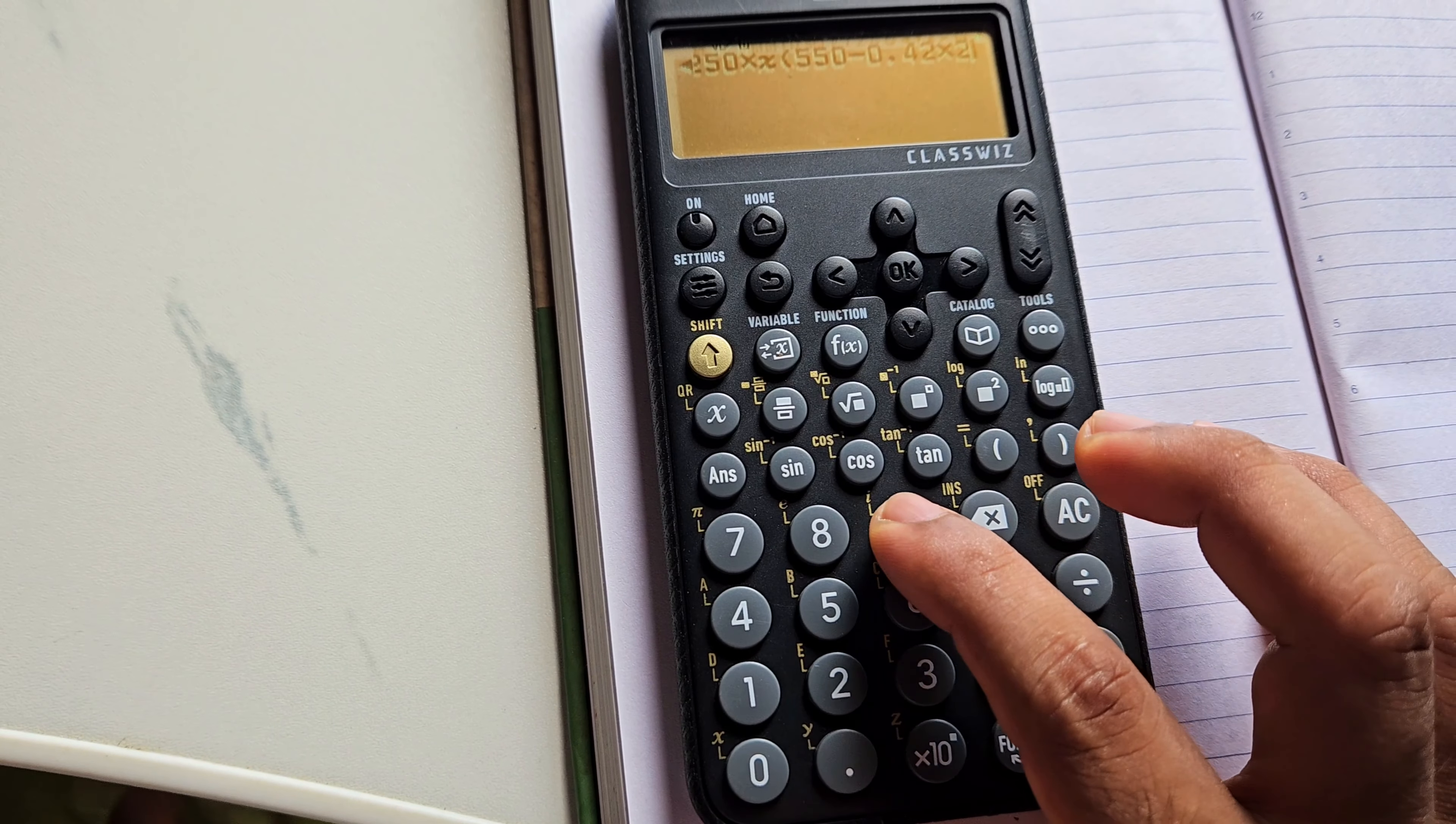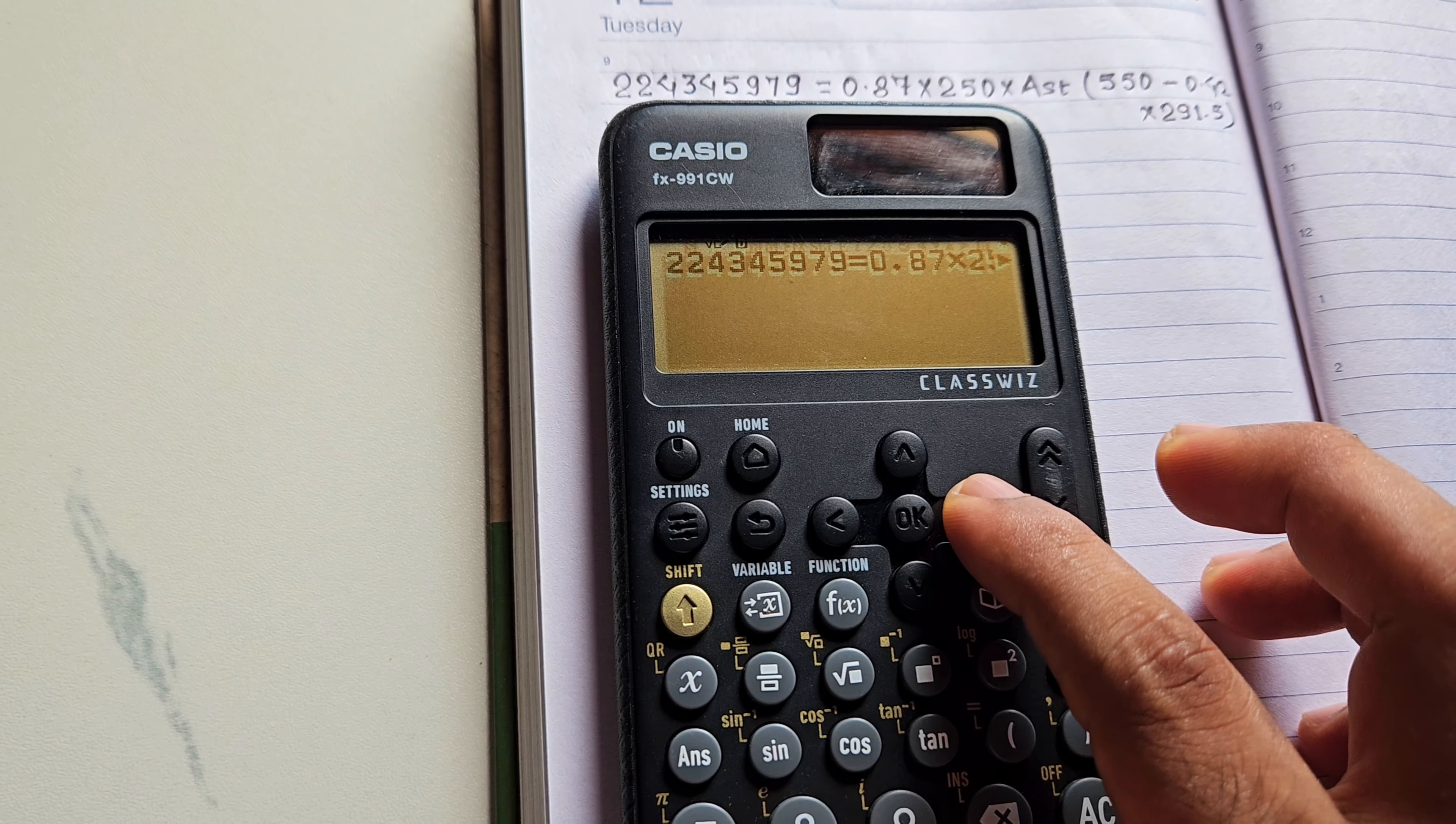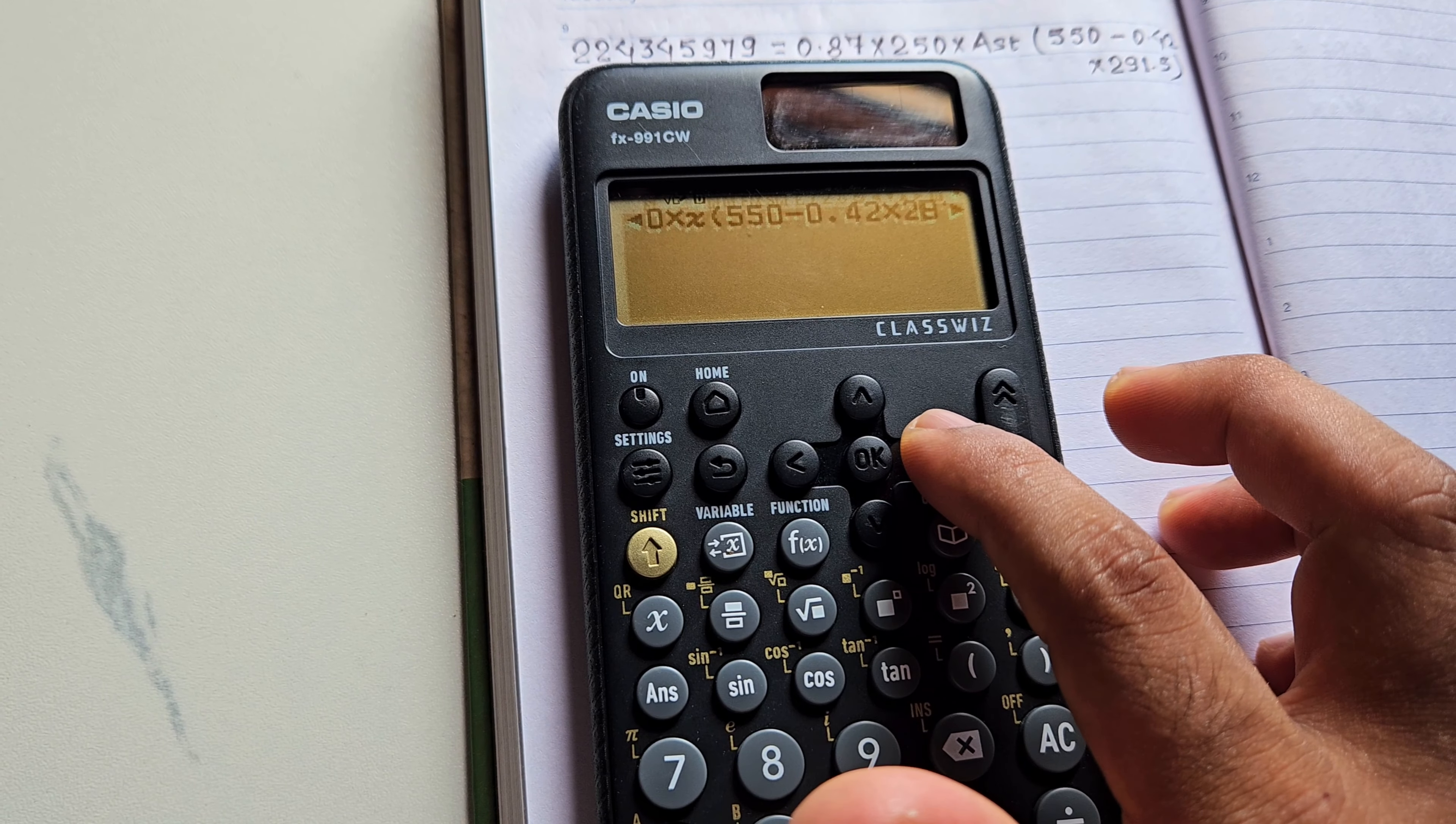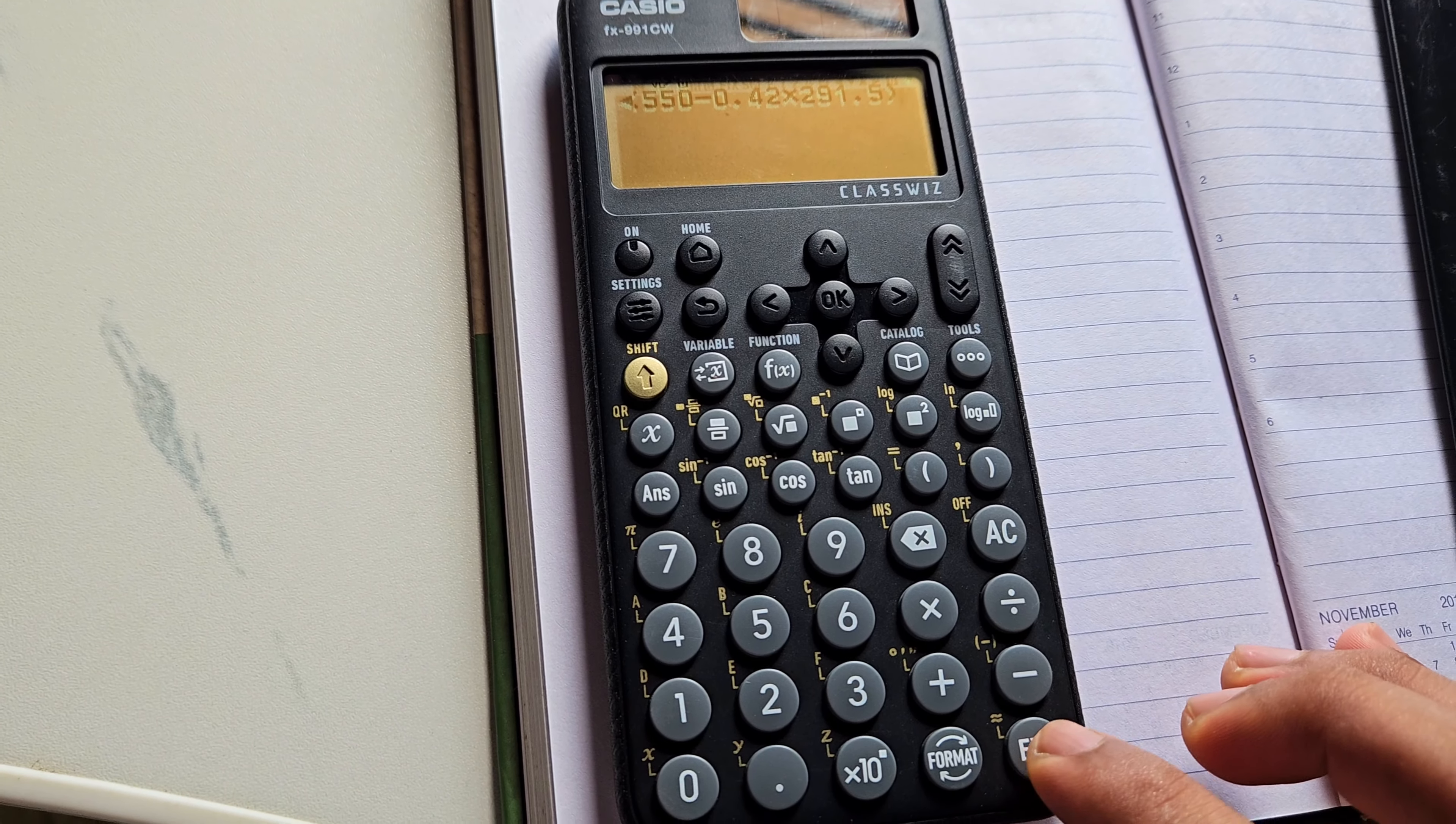And then close the bracket. If you want to check your equation, you can check one by one: 224345979 = 0.87 × 250 × X × 550 - 0.42 × 291.5, and bracket close. Don't forget to close the bracket. After checking the equation, here it is execute. So just press this button.